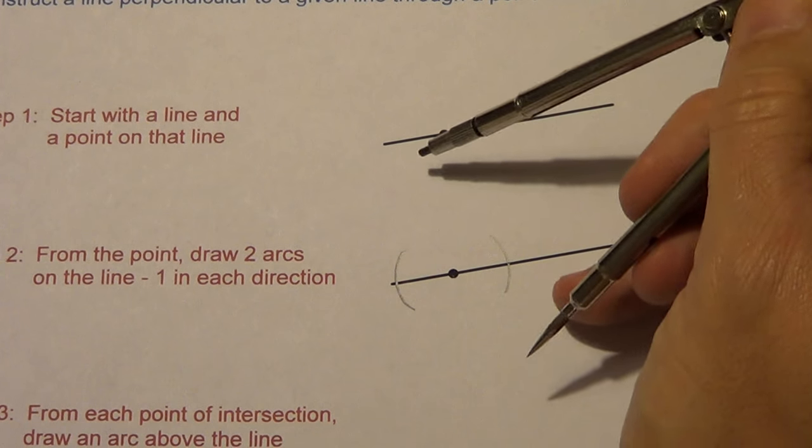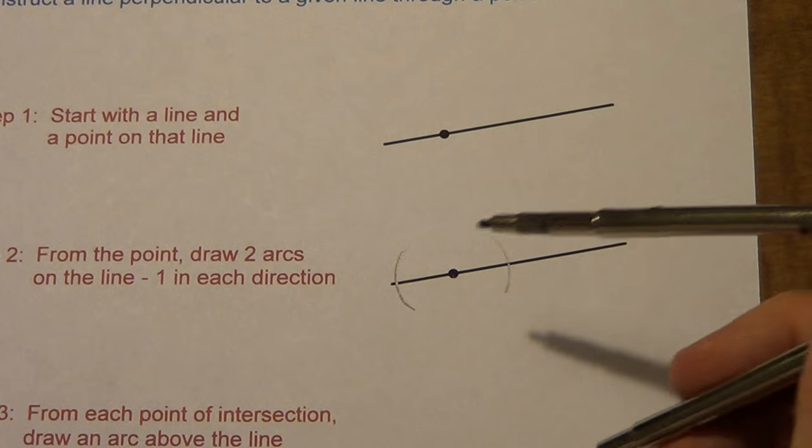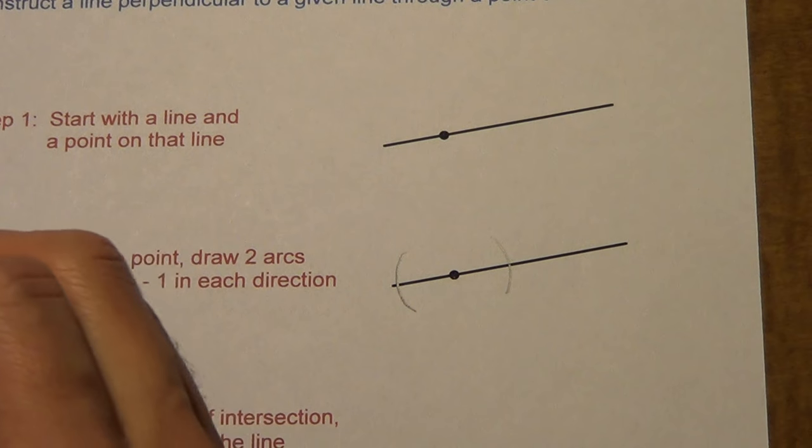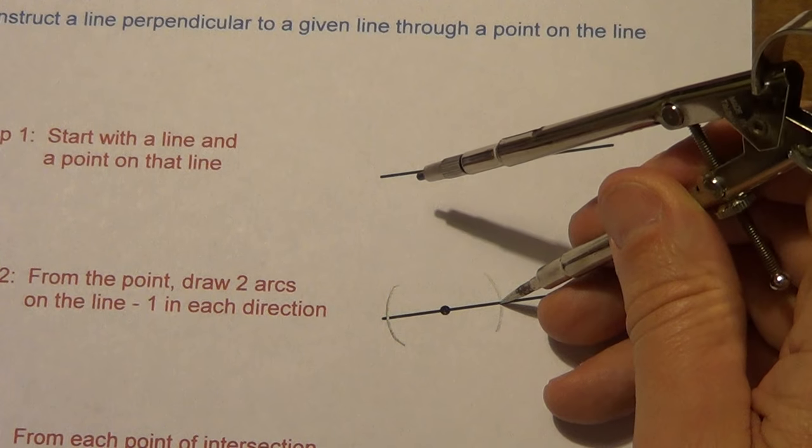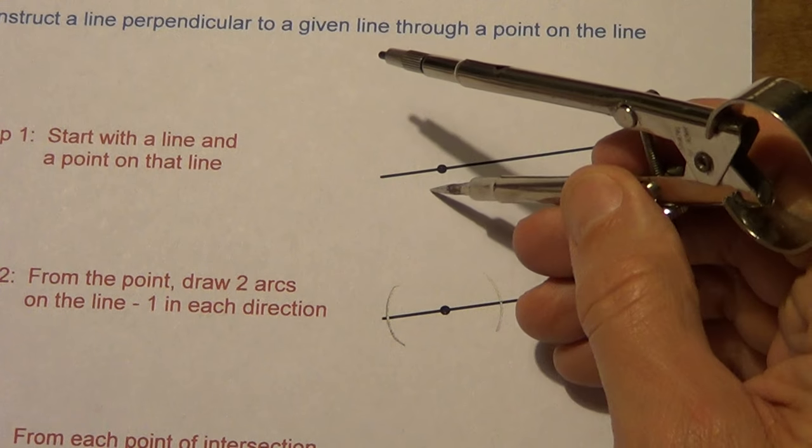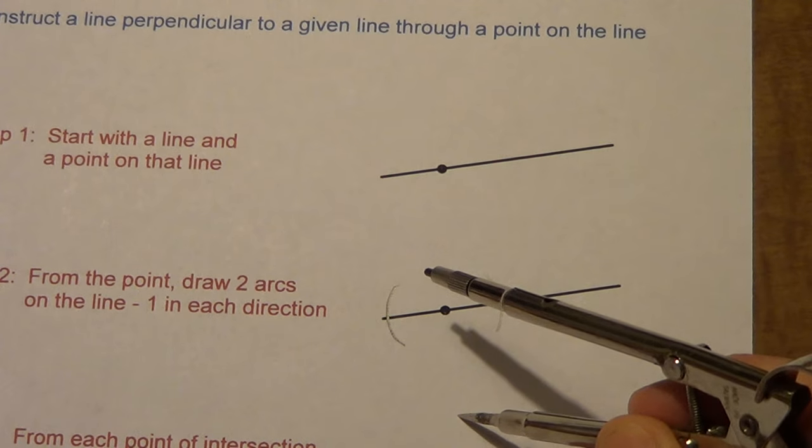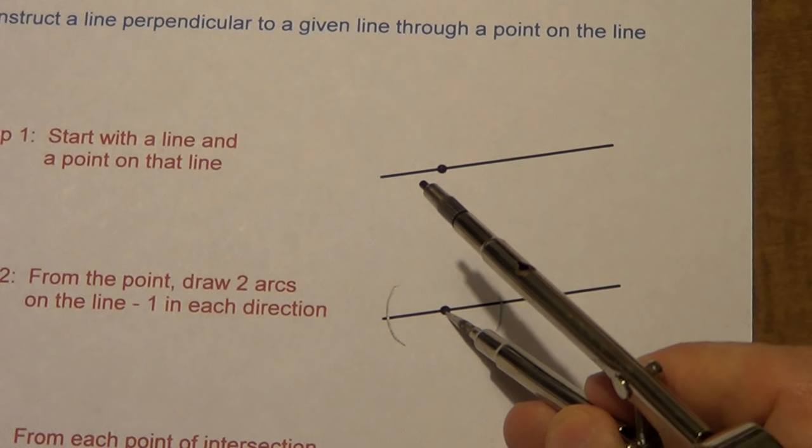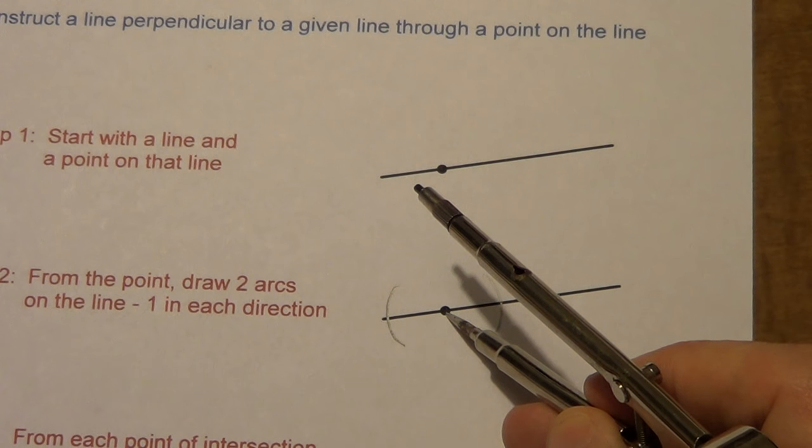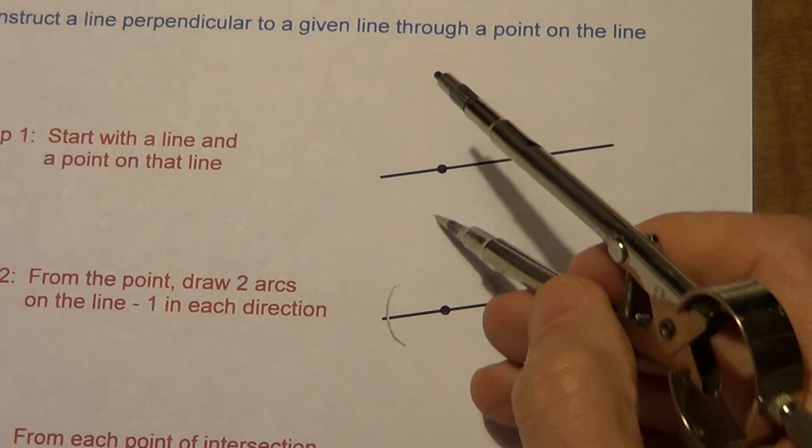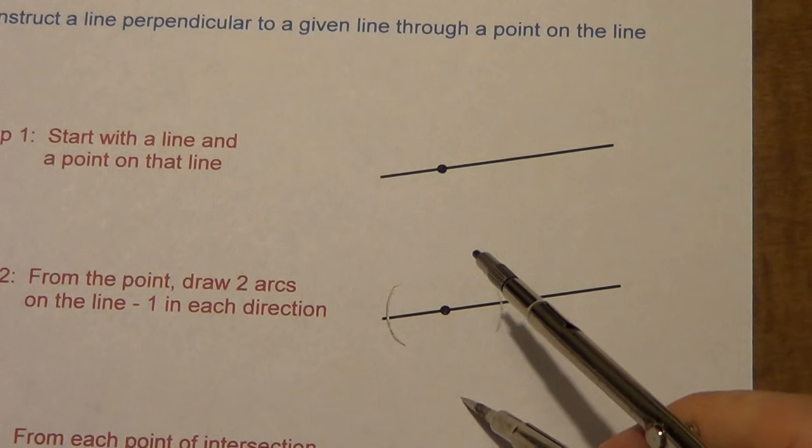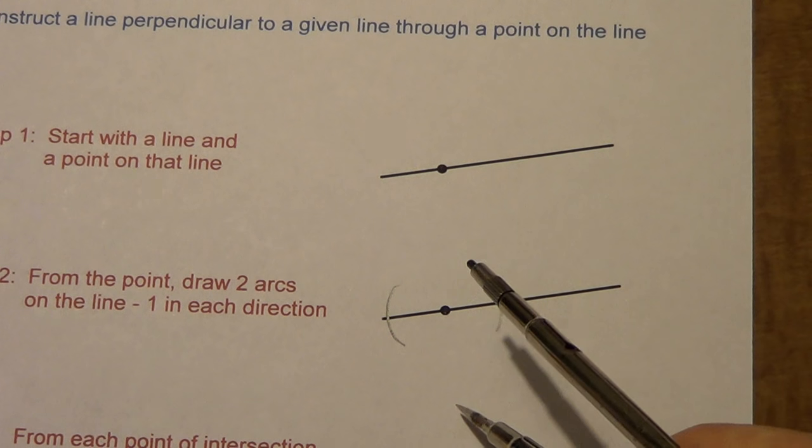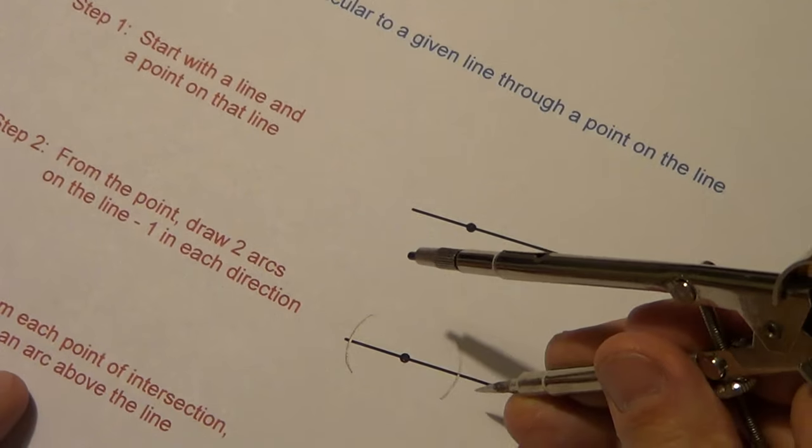Basically what we're doing at this point is the football, but we really only need half of it. When we did the full football, we needed a point of intersection up here and down here. Since I already have this point right here, I don't need two points to connect because I already have one of the two. So I'm going to use this and one, or this and one down here. I could do all three, and they should end up in a nice straight line.